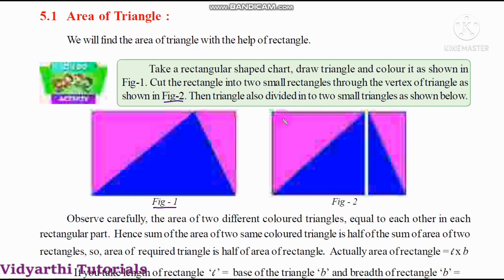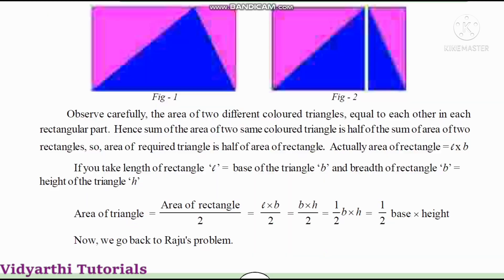The vertex of the triangle — vertex means a point — is shown in figure 2. The vertex of the triangle is also divided into two small triangles as shown below. Observe carefully: the area of two different colored triangles are equal to each other in each rectangular part.